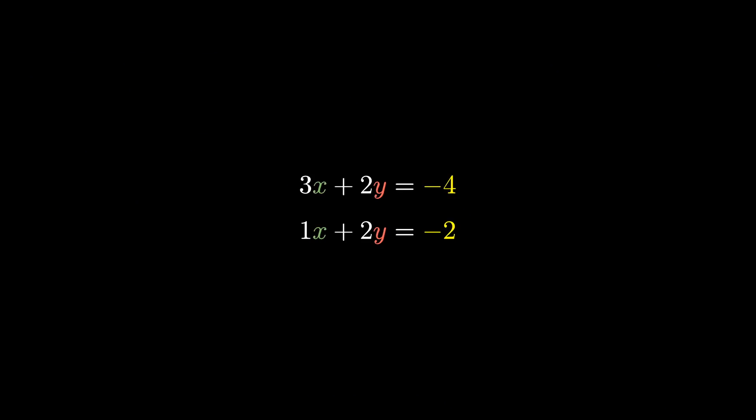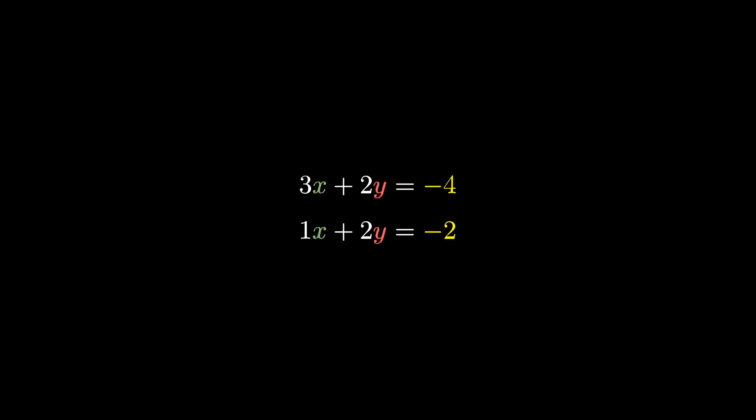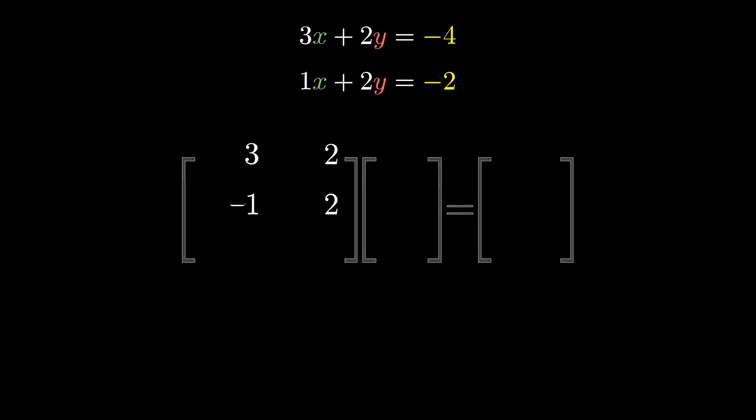Alright, so the setup here will be some linear system of equations, say with two unknowns, x and y, and two equations. In principle, everything we're talking about will also work for systems with larger number of unknowns and the same number of equations. But for simplicity, a smaller example is just nicer to hold in our heads.